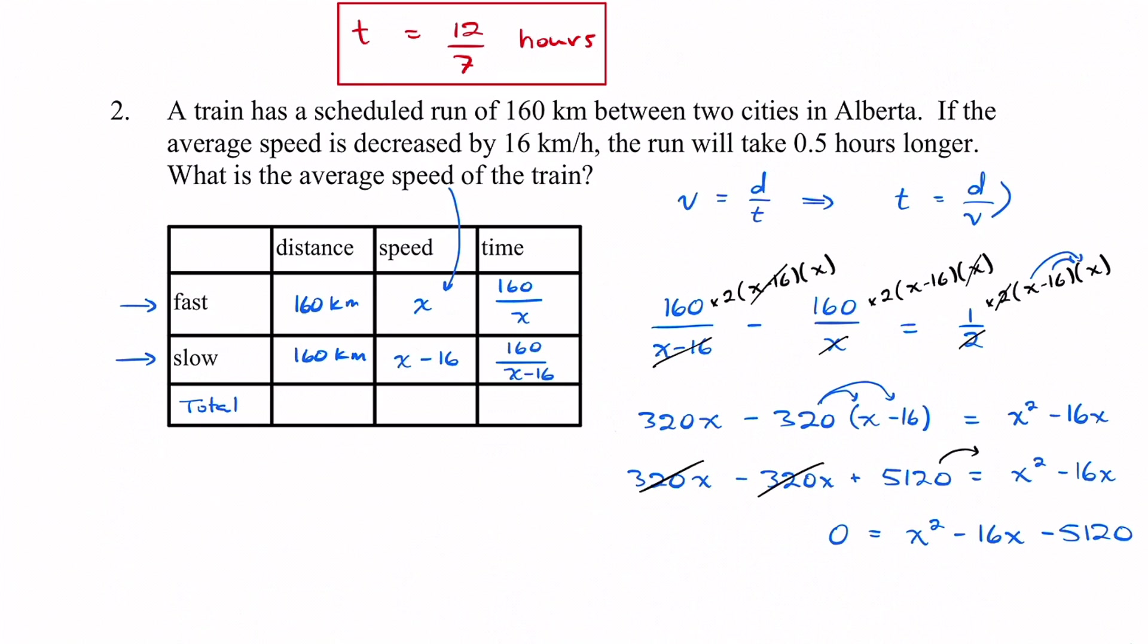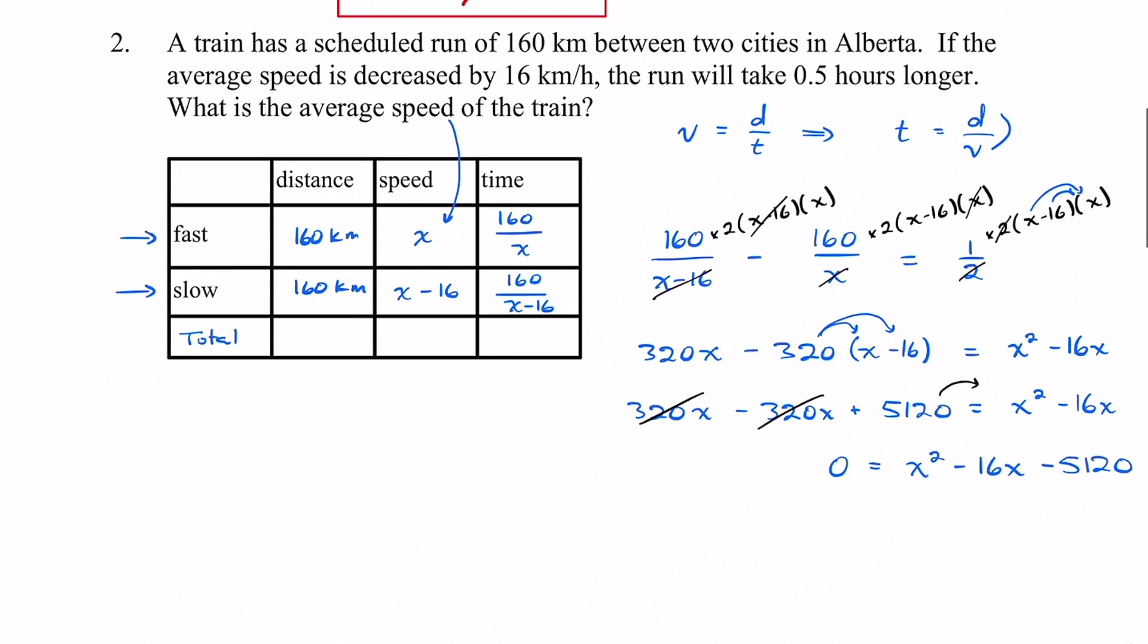To solve that, this is quadratic. We could use our quadratic formula. We could solve it by completing the square, or you could try to factor it. In this case it actually does factor. You need to have a product of negative 5,120 and a sum of negative 16. So that's going to be a negative 80 and a positive 64. So we're going to have x minus 80 and x plus 64.